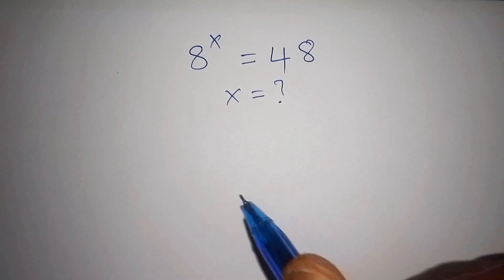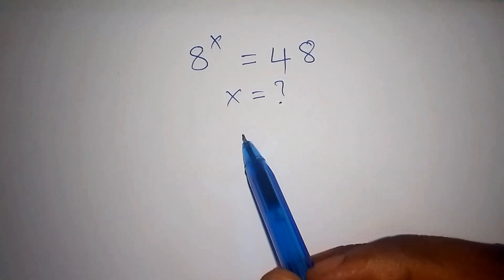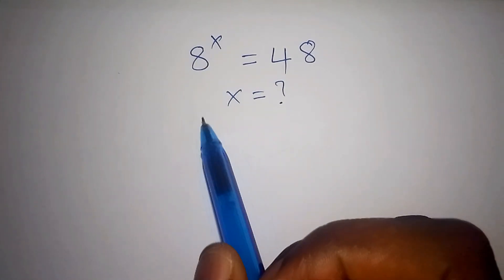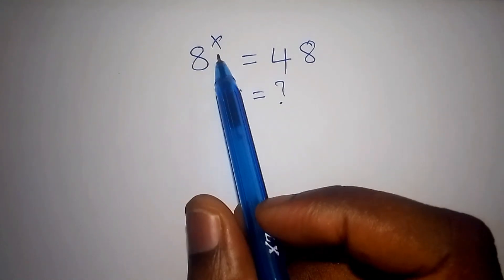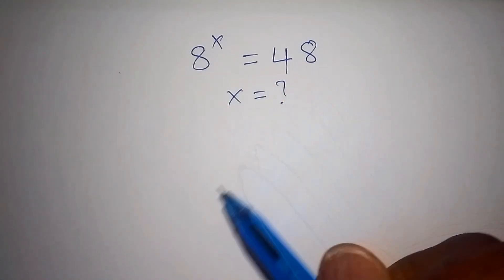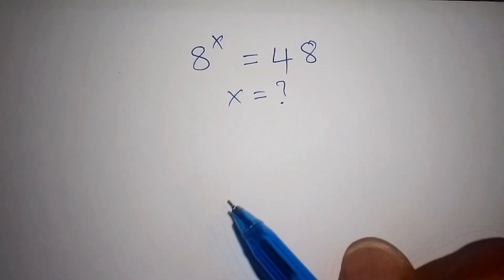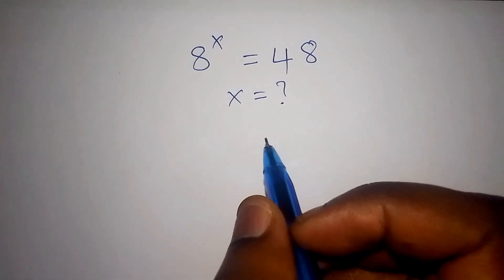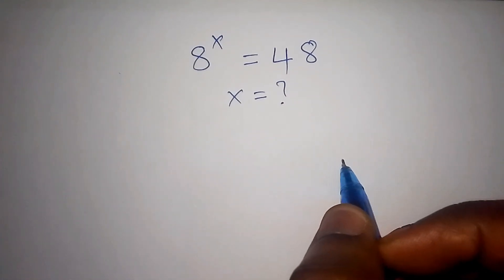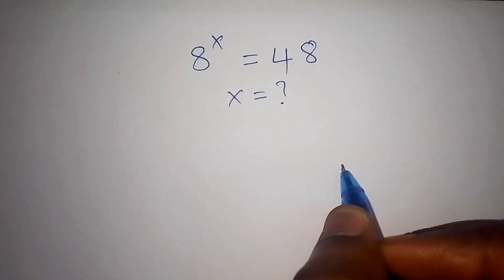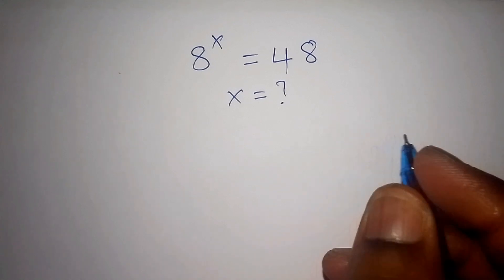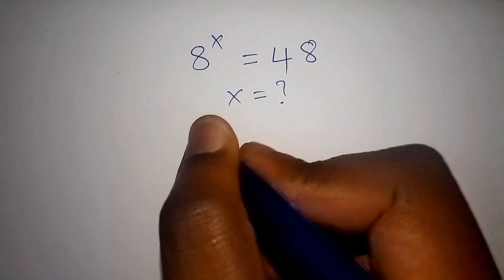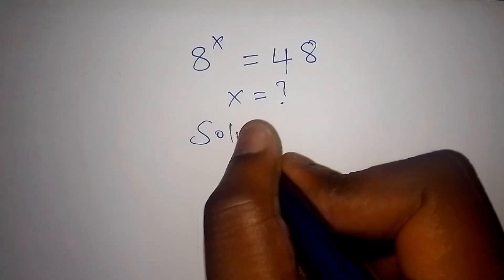Hello viewers, welcome to this maths video where we solve for the value of x. The maths problem is 8 to the power of x is equal to 48. Make sure you watch the video to the end, and if you know how to work it out, share your answers in the comment section. Let us work it out within the shortest time possible.